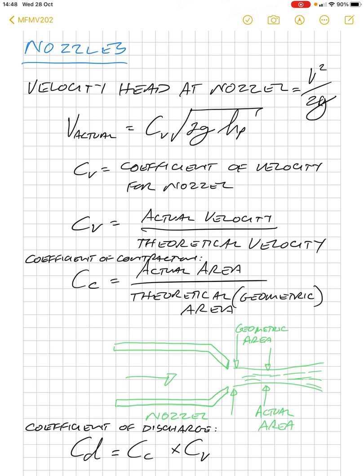the square root of 2GH, multiply that by a coefficient of velocity for the nozzle. In other words, the velocity, the actual velocity, is somewhat less than the theoretical value, due to a loss through the nozzle.